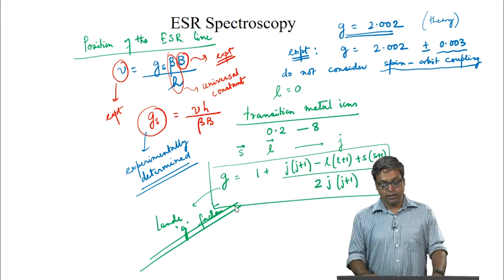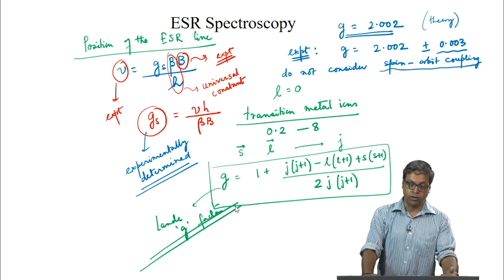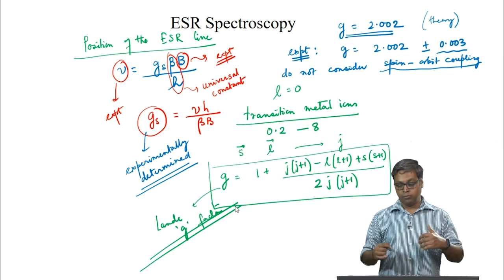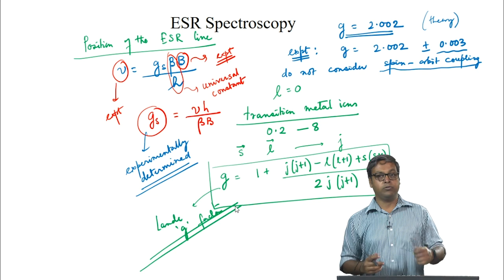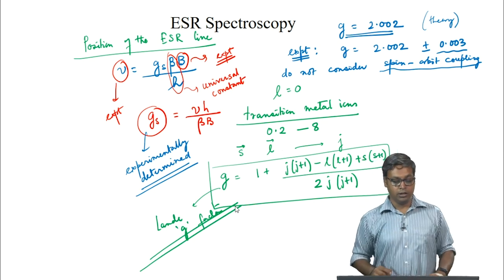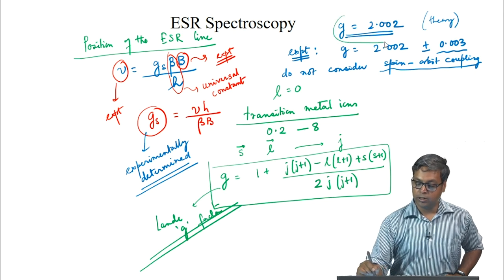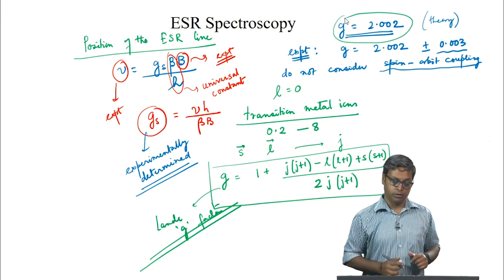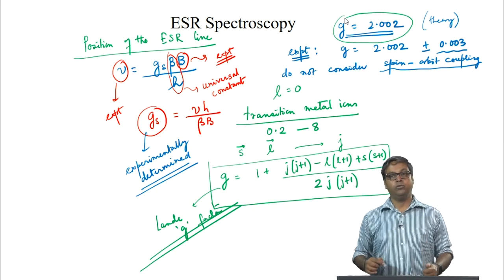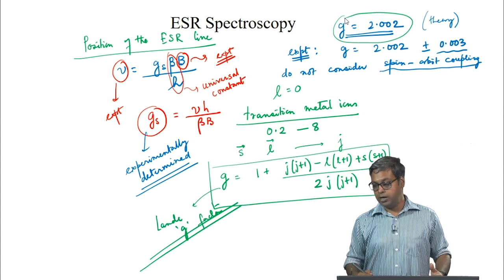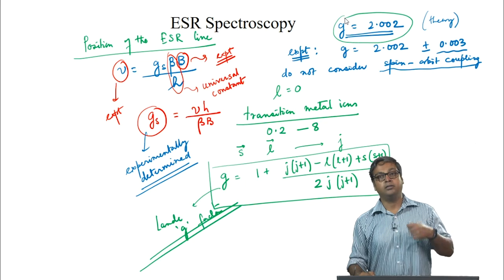We will end this lecture here. We have given a brief introduction to ESR spectroscopy: ESR occurs when we have unpaired electrons, we examined the two spin states and the Larmor transition frequency, and we saw that the G factor can be experimentally determined. From the comparison of theoretical and experimental values we can determine whether spin-orbit coupling is necessary. In the next lecture we will continue with ESR spectroscopy and discuss the hyperfine structure in the ESR spectrum, analogous to the fine structures seen in high-resolution NMR spectra.